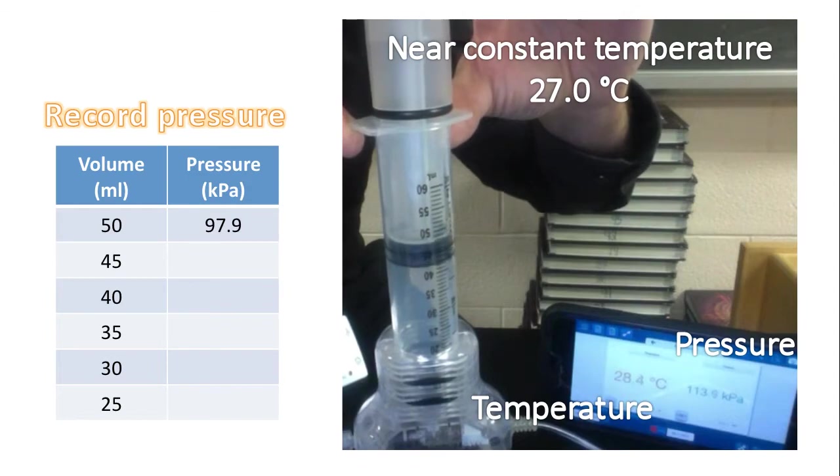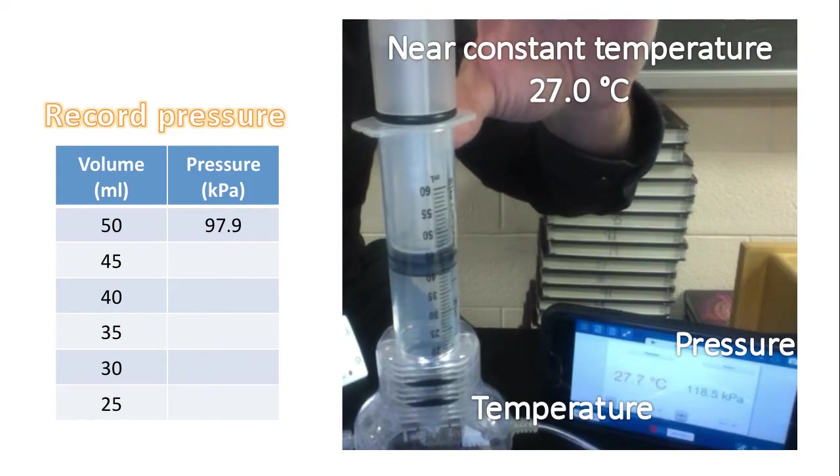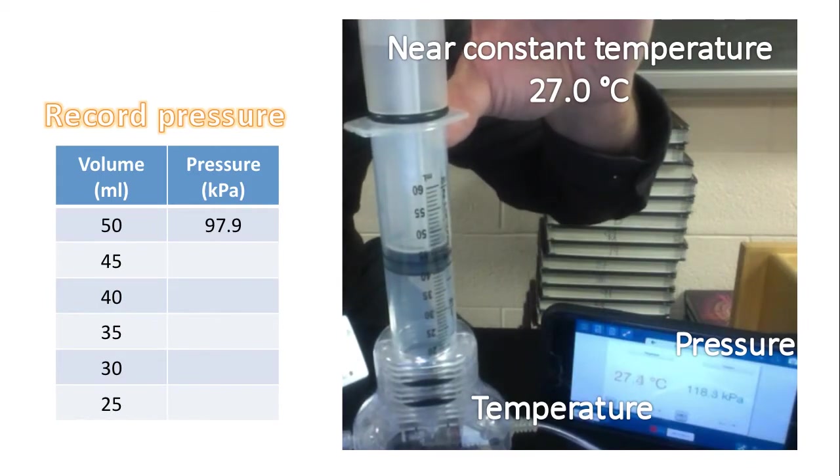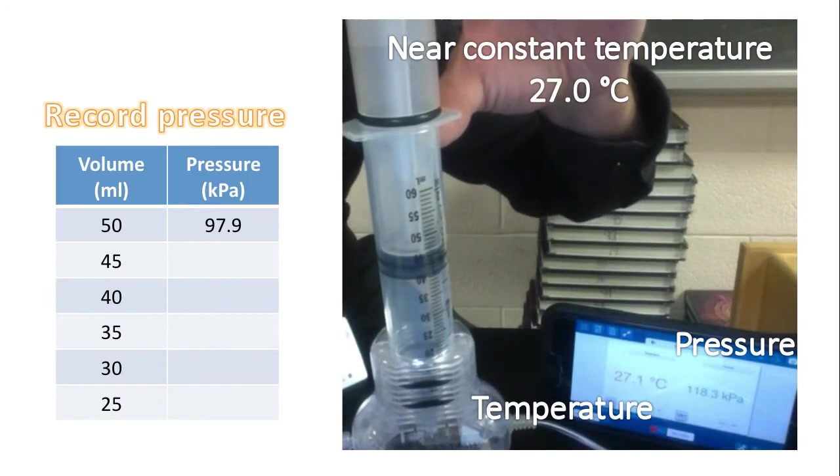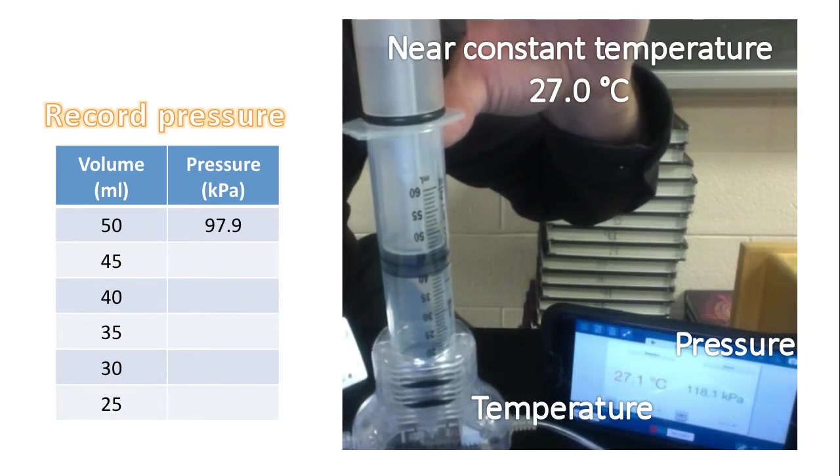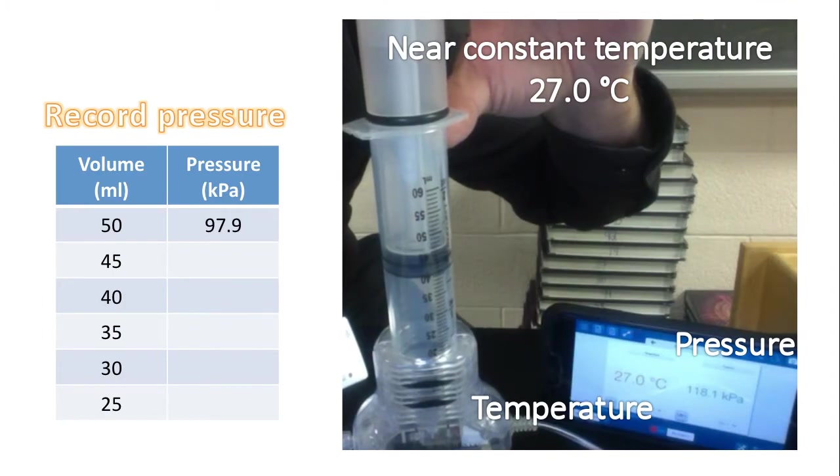And now we've pushed down, and now we've hit around 40 milliliters. Once again, we're going to wait for the temperature to go back to around 27.0 or 27.1, and then we're going to record that pressure.